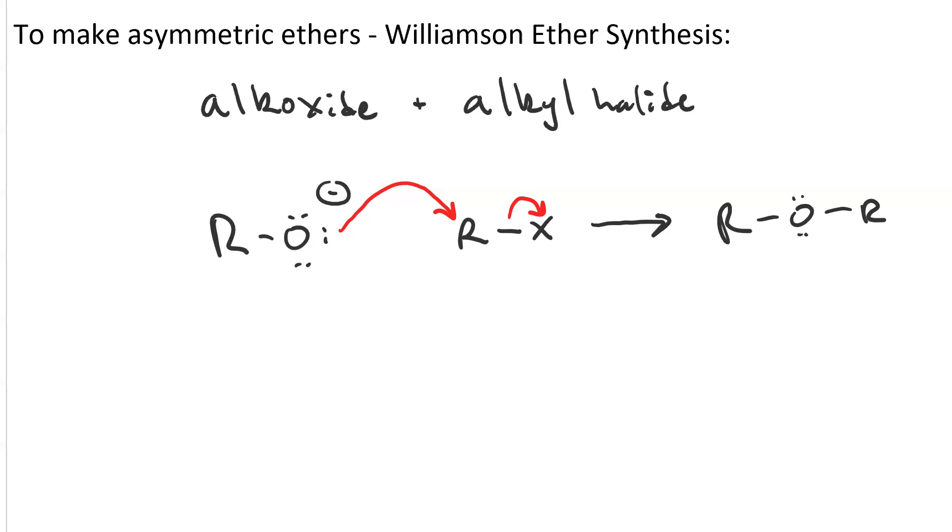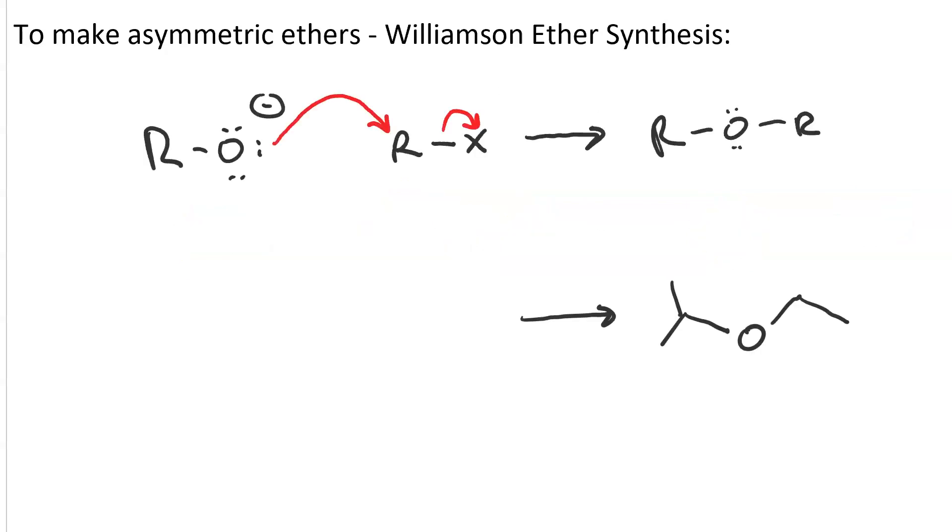So one of the fragments comes from the alkoxide, and the other fragment comes from the alkyl halide. So to make ethyl isopropyl ether, you might think we could use isopropoxide and ethyl bromide. And that would certainly work. We get SN2 attack.